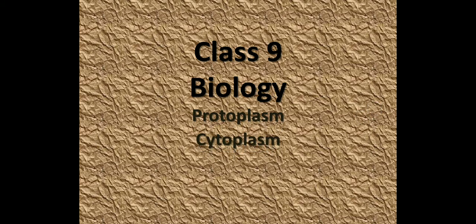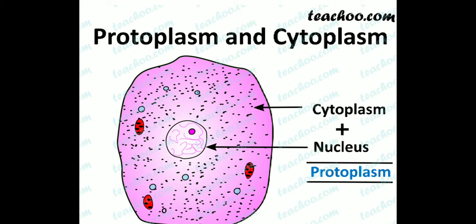I have covered all four types of organelles present in the cell in this video: protoplasm, cytoplasm, plastids, and vacuole. So let's begin. First is protoplasm and cytoplasm — those who still have confusion about whether protoplasm and cytoplasm are the same thing or different, this slide might give you a proper idea.